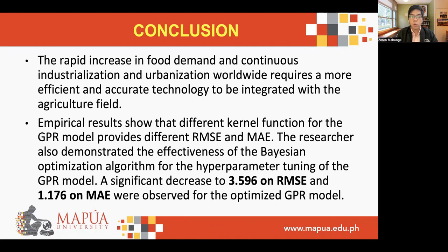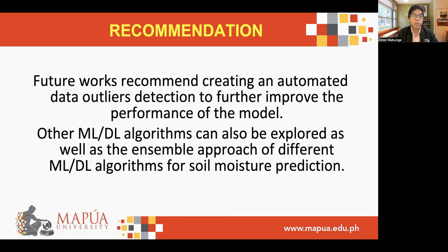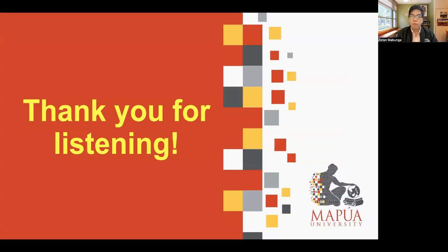A significant decrease to 3.596 on RMSE and 1.176 on MAE were observed for the optimized GPR model. For future works, it is recommended to create an automated data outlier detection system to further improve model performance. Other machine learning or deep learning algorithms can also be explored, as well as ensemble approaches combining different machine learning and deep learning algorithms for soil moisture prediction. Thank you for listening, and that ends my presentation.